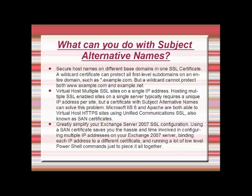You can also virtual host multiple SSL certificates on a single IP address. Hosting multiple SSL-enabled sites on a single server typically requires a unique IP address per site, but a certificate with subject-alternative names can solve this problem. Microsoft IIS 6 and Apache are both able to virtually host HTTP sites using Unified Communication SSL, also known as SAN certificates. Using a SAN certificate greatly simplifies your Exchange Server 2007 SSL configuration, saving you the hassle of configuring multiple IP addresses, binding each to a different certificate, and running low-level PowerShell commands just to piece it all together.